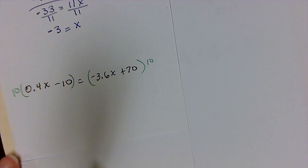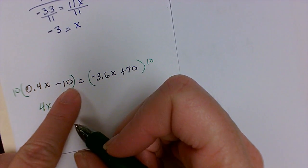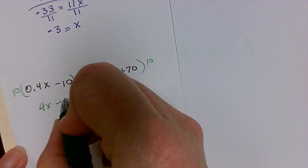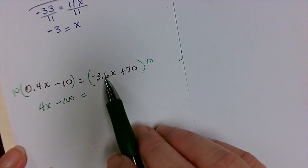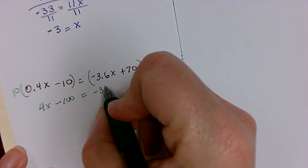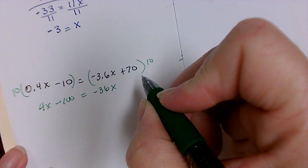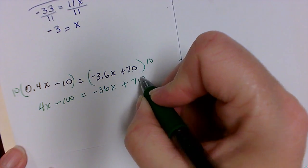So 10 times 0.4, that will move my decimal place over one place. So I will have 4x. And 10 times 10 is going to get me a negative 100. Here again, the 10 will multiply and move my decimal over.